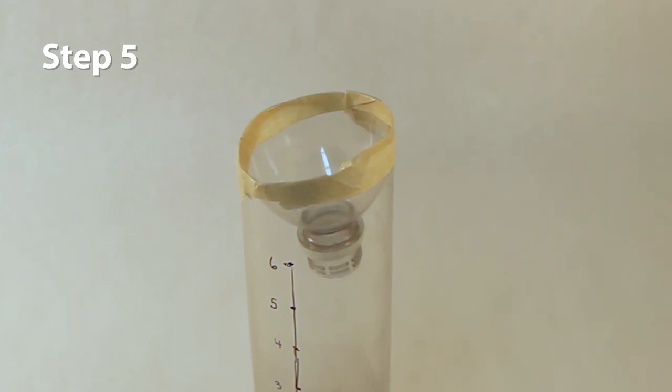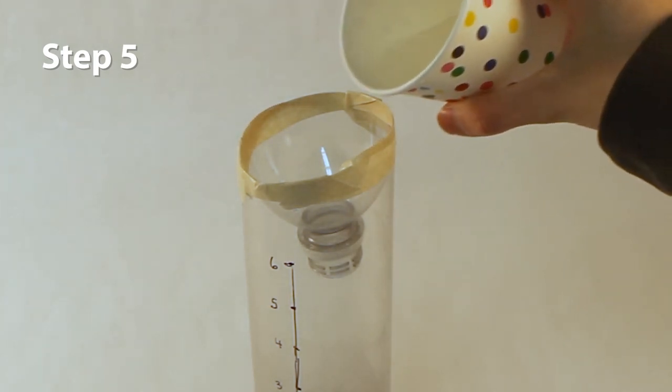Step 5: Fill your rain gauge with water up to the zero line for an accurate rain measurement.